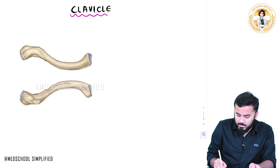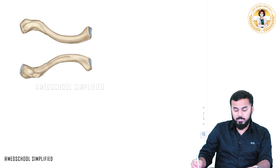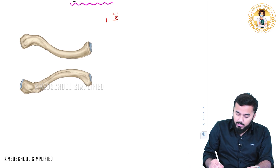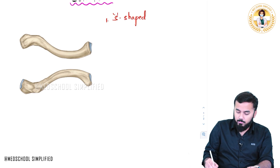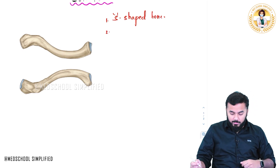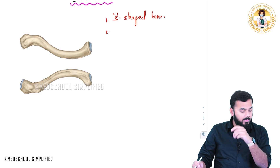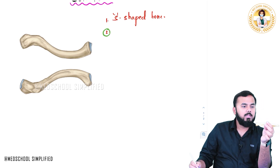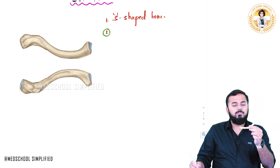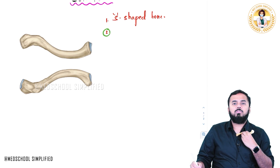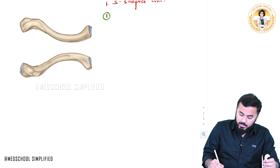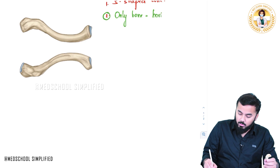Now whenever you look at the clavicle, the first thing that comes to mind is that the clavicle is an S-shaped bone. Now what are the peculiarities of the clavicle? The first peculiarity is that this is the only bone which lies horizontally.